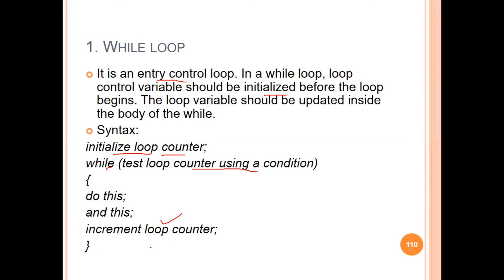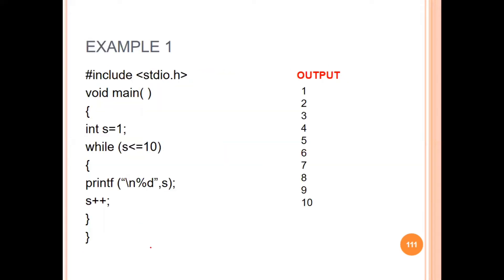This is the syntax for the while loop. Let's start an example. In this example, we are going to print from 1 to 10. In the main function, we initialize the loop variable. While the condition is less than or equal to 10, the loop executes. We print the value, then print the next line, then update the control variable, then close the loop.